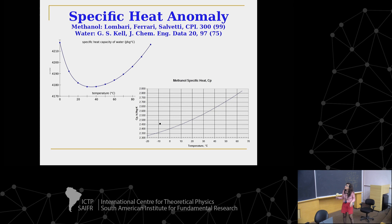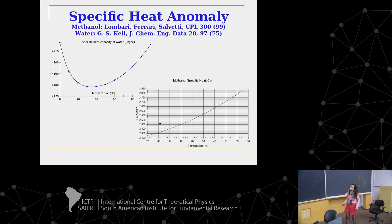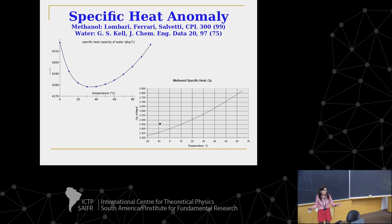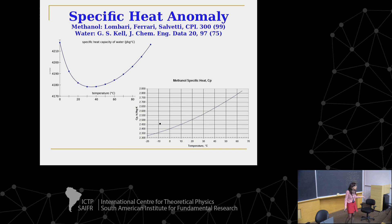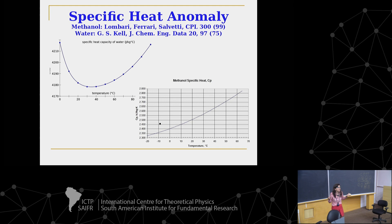Let me explain a few of these water anomalies. This is the specific heat of water. You see that specific heat versus temperature has this funny U-shape. If you take any other material like methanol, it always increases with temperature. In water, the specific heat increases as temperature decreases, and it is also very large — you have to give a lot of heat to increase the temperature just a little bit. That's a good thing since we are made of water.